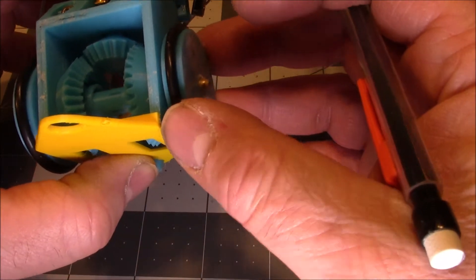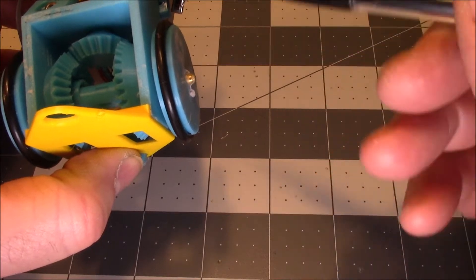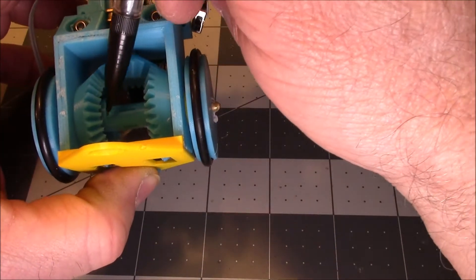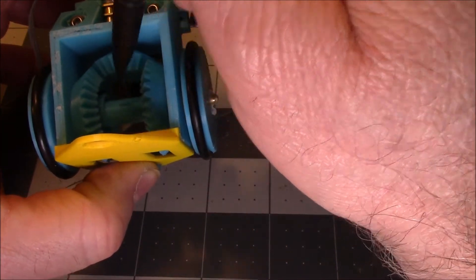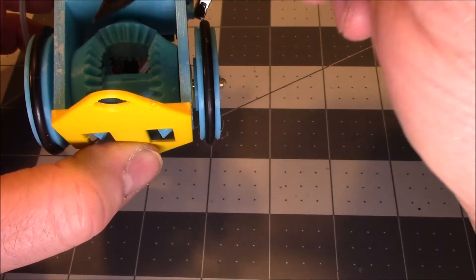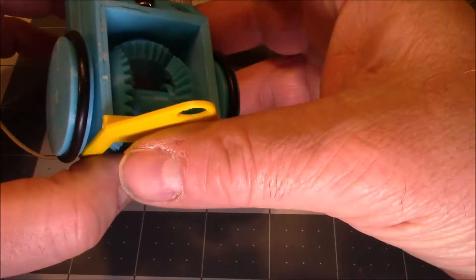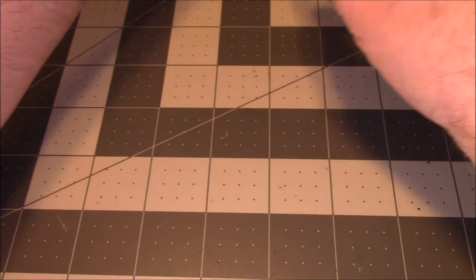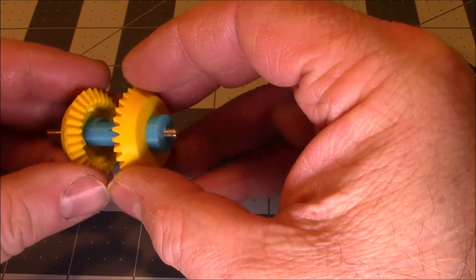This wheel is hooked directly to this center section here with the ratchet mechanisms. This wheel is hooked directly to this gear. To explain it a little better, I'll show this part.